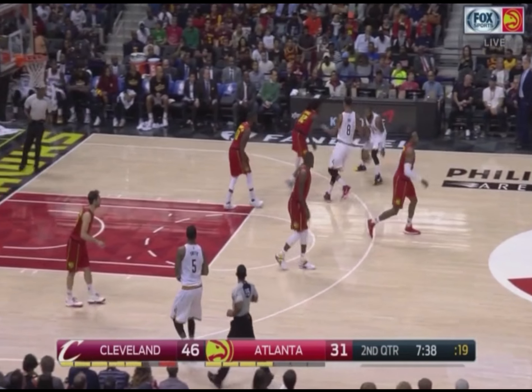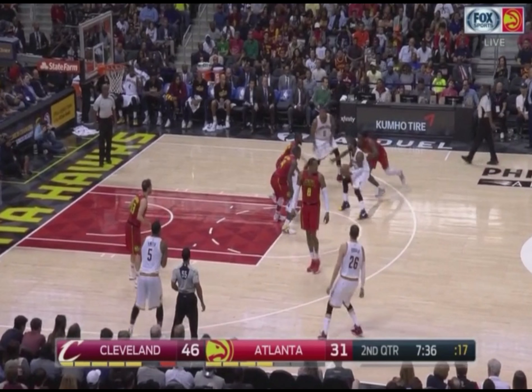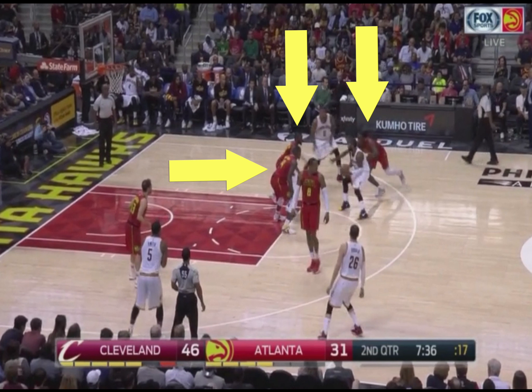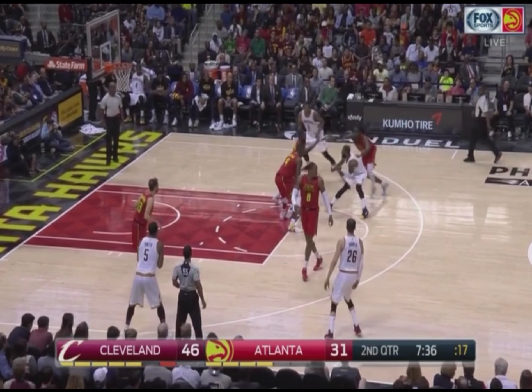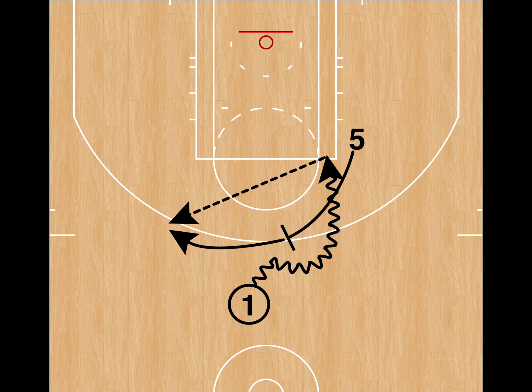Here's an example of Kyrie Irving getting a side pick and roll in transition. As he comes off the screen, the entire defense collapses on him, and he uses a pocket bounce pass to hit the rolling Channing Frye.